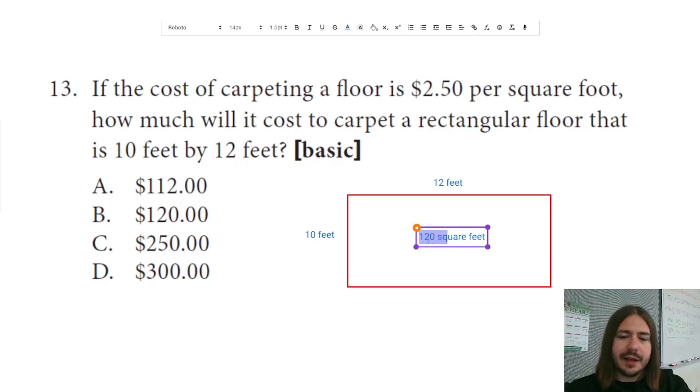we could just multiply that number by the 2.50, right? So if it's 2.50 for one square foot, then it's $5 for two square feet, and so on. Basically, for each square foot, we're going to add $2.50.